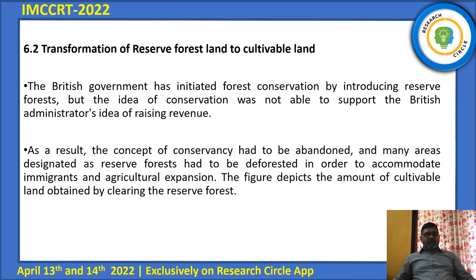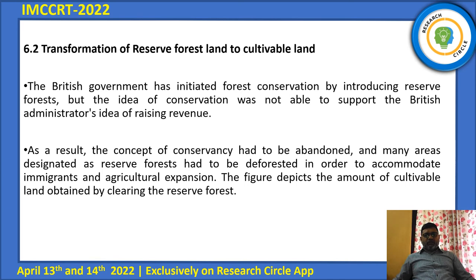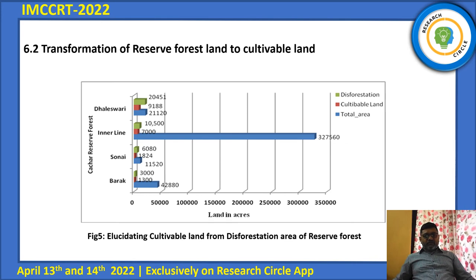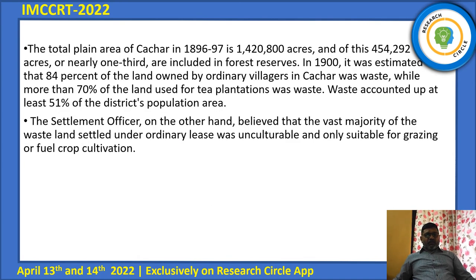Regarding the transformation of reserve forest land to cultivable land: the British government initiated forest conservation by introducing reserve forest, but the idea of conservation was not able to support the British administrative goal of raising revenue. As a result, the concept of conservation had to be abandoned and many areas designated as reserve forest had to be deforested to accommodate immigrants and agriculture. The total plain area of Kachar in 1896–97 is 1,20,800 acres, of which 4,54,292 acres — nearly one-third — are included in forest reserve.